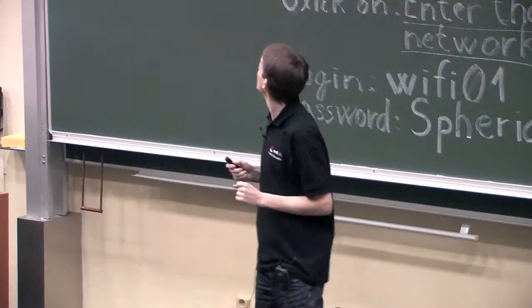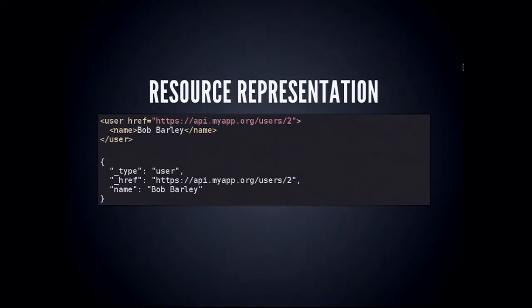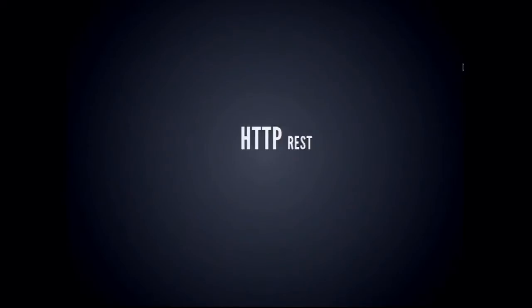Let's look at them. This shows two representations of the same resource — a user that has a name, nothing more. The upper one is XML, the lower one is JSON. They have only a hyperlink to themselves, which is useful when you fetch the resource and want to know where to send an update request. It's always useful to link not only other resources but also itself. That was a brief introduction to REST, resources, and resource representations. Let's now look at HTTP.